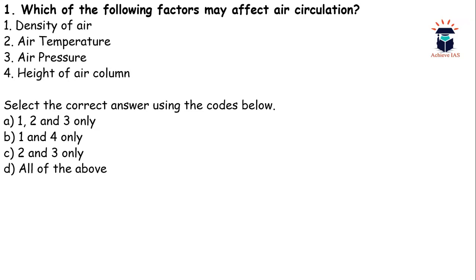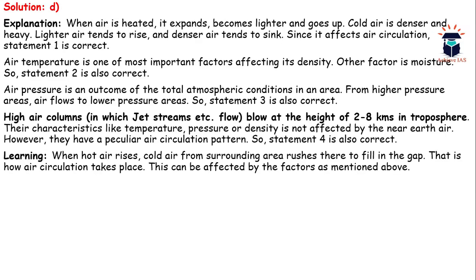First question: which of the following factors may affect air circulation? (1) Density of air, (2) Air temperature, (3) Air pressure, (4) Height of air column. We have to choose the correct answer using the codes below. All these factors play an important role in air circulation. When air is heated it expands, becomes lighter and goes up, while cold air is denser and heavy — lighter air rises and denser air sinks. Statement 1 is correct. Air temperature is one of the most important factors affecting density, along with moisture — statement 2 is also correct.